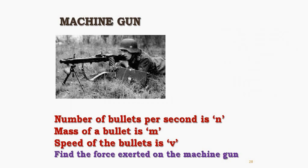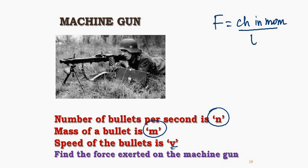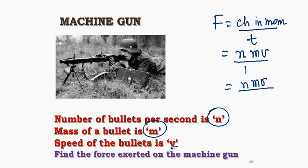For example, a jet fires n bullets, each of mass m, with velocity V. What is the force exerted on the machine? The concept is Newton's second law — rate of change of momentum. Each bullet has momentum mV. n bullets are fired per second, so the force exerted on the machine equals n times mV.